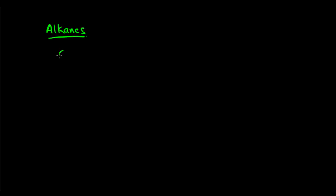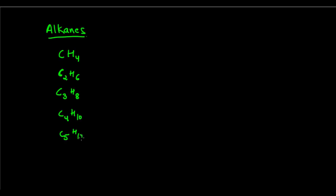First, we have methane, that is CH4. This is an alkane because there's only one carbon atom and there is no bond with any other carbon. The next hydrocarbon is C2H6, which is ethane. Then C3H8, which is propane. Then C4H10, which is butane, and C5H12, which is pentane. These are the first five alkanes.